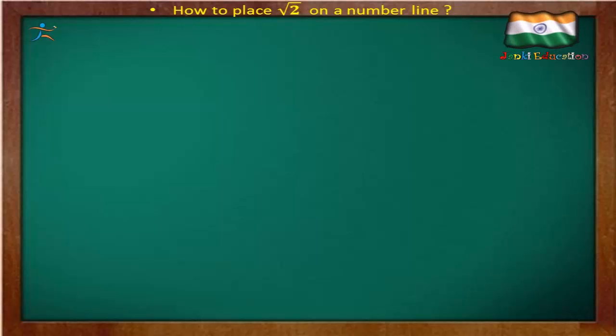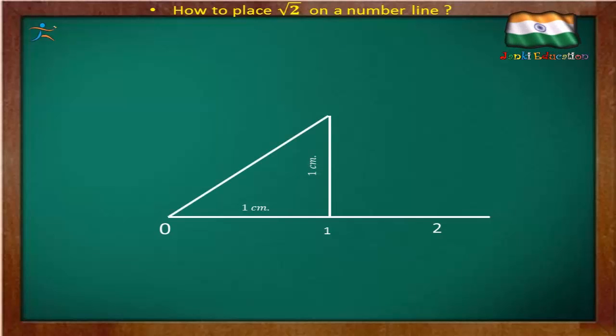First you draw a number line: 0, 1, and 2. Now from the number 1 you need to draw a perpendicular line with 1 cm measurement. Now you need to join both the ends and you will get the point A.